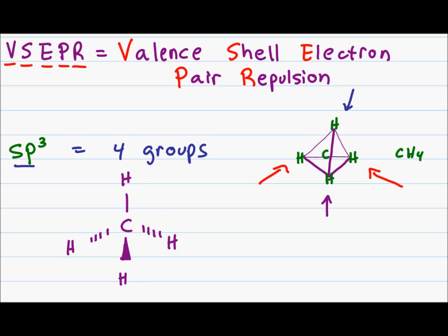If you make a model of this molecule and then rotate it, you will see that no matter how you turn it, the atoms will always be equidistant from each other, and the angle between hydrogen to carbon to hydrogen will always be 109.5 degrees.